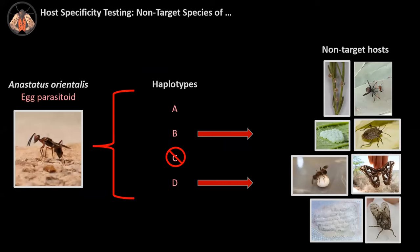These are not really good news. Hannah Broadley will explain more of this in the biocontrol session, but they have found up to six different haplotypes of Anastatus orientalis. We are collaborating to test the non-target host range of these haplotypes on the east and west coasts of the U.S. It seems that the different haplotypes have similar or the same host range as haplotype C, which is the one we tested originally.